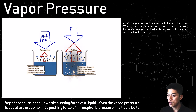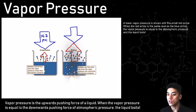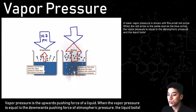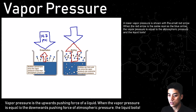So when vapor pressure and atmospheric pressure are equal to each other, the liquid starts to boil. And that's what vapor pressure is — vapor pressure simply is the upwards pushing force of your liquid.